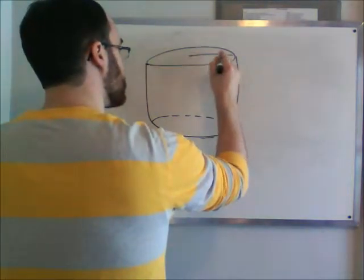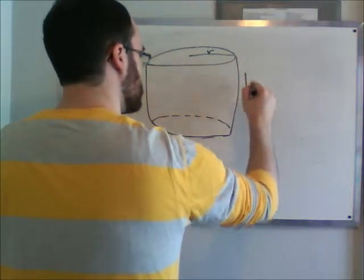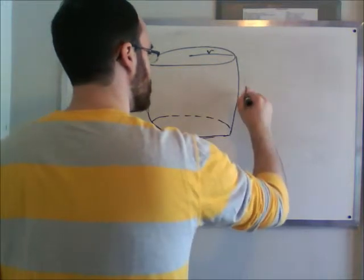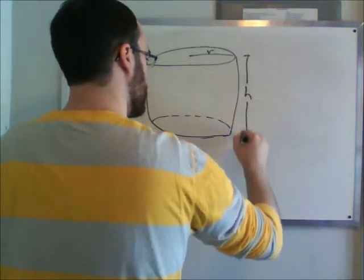We have a radius of the circle here, and we have a height of the cylinder.